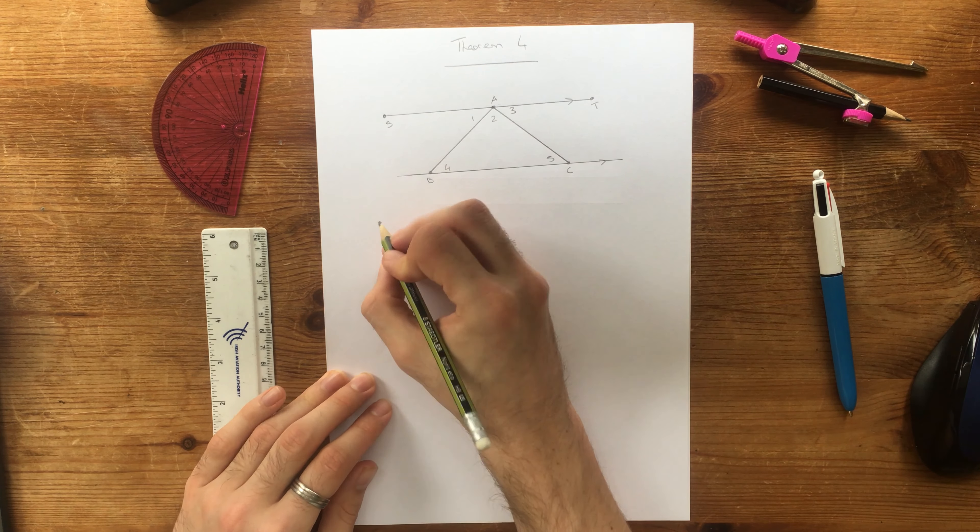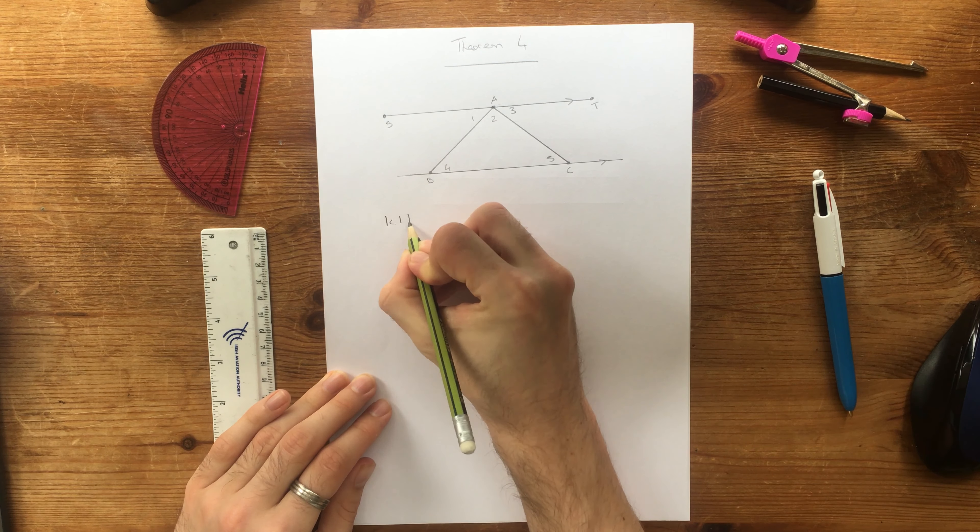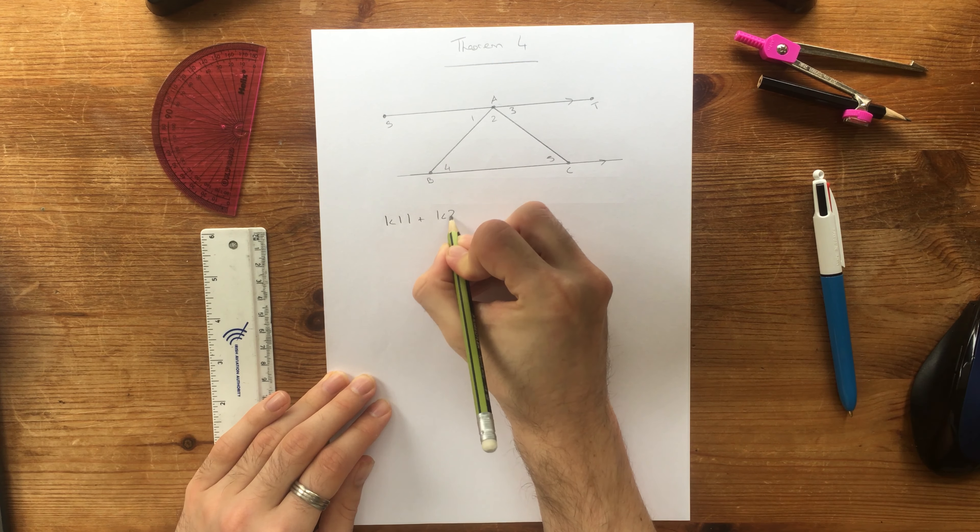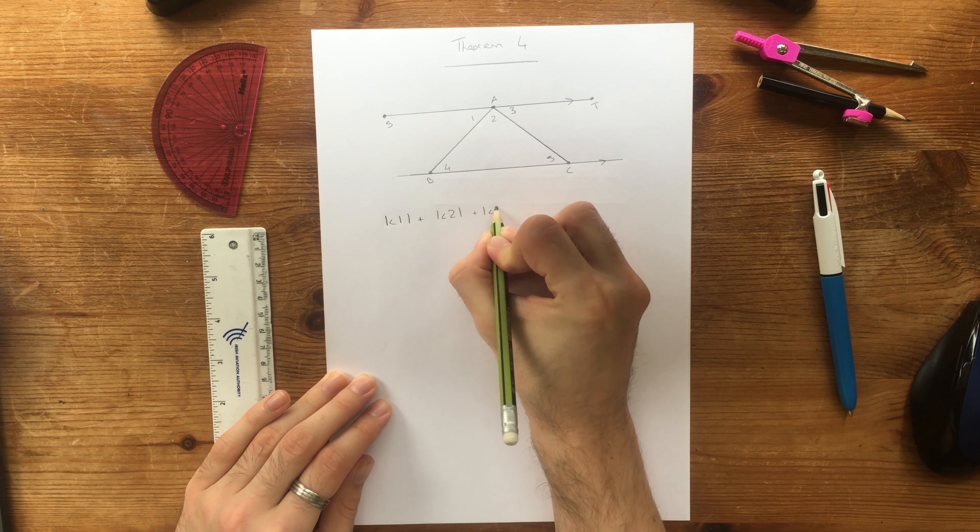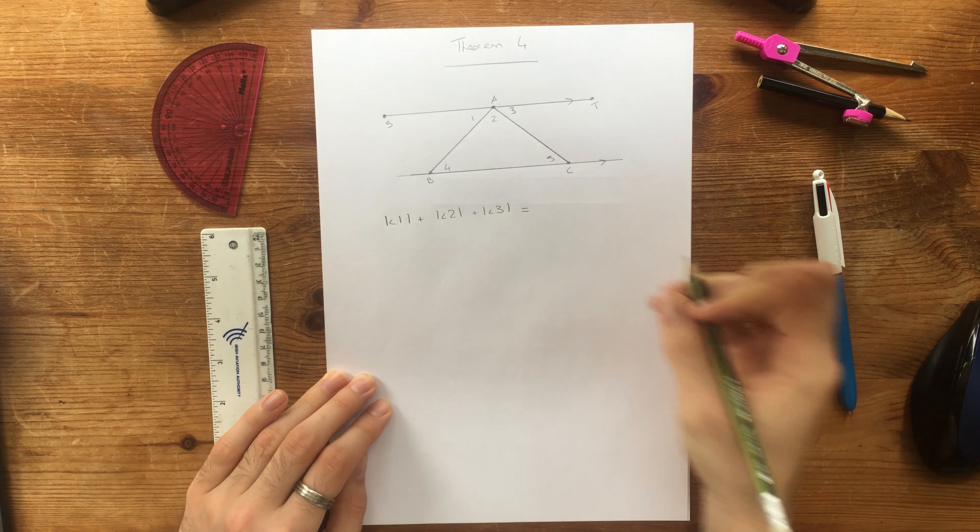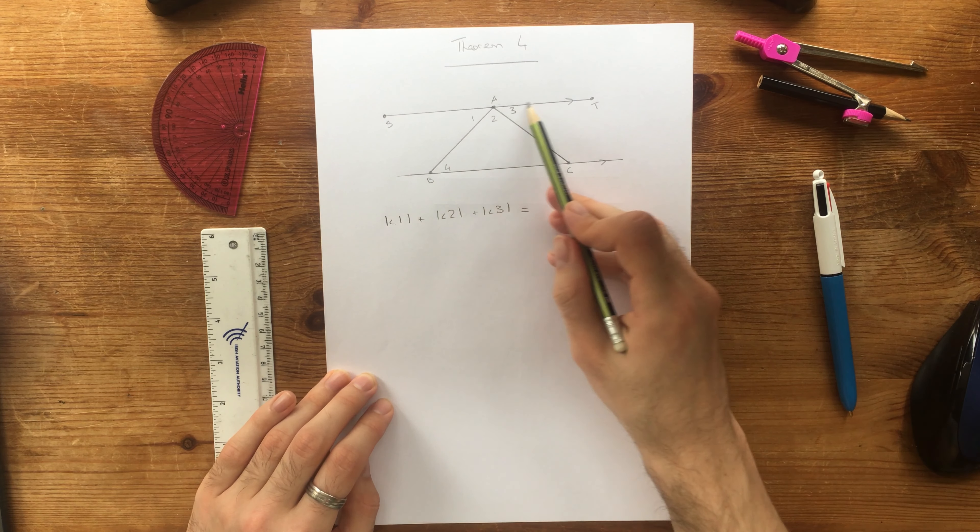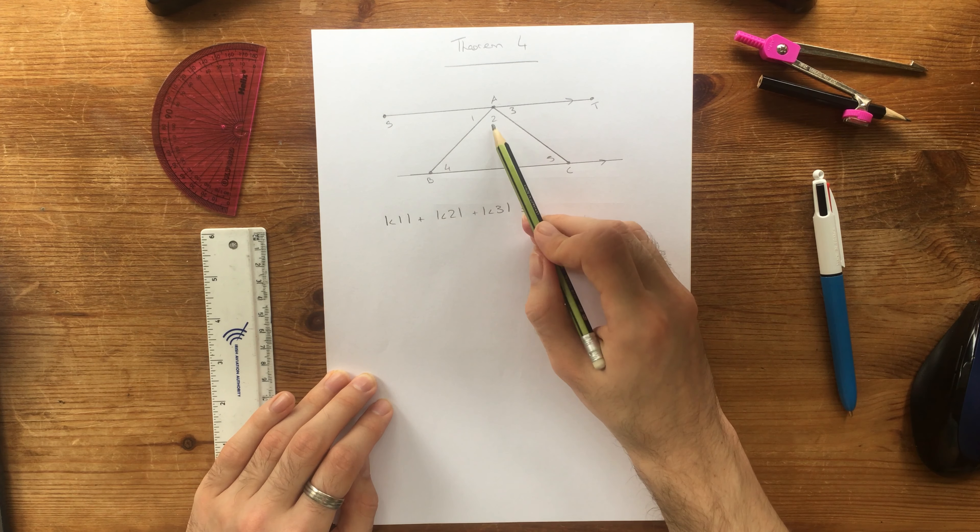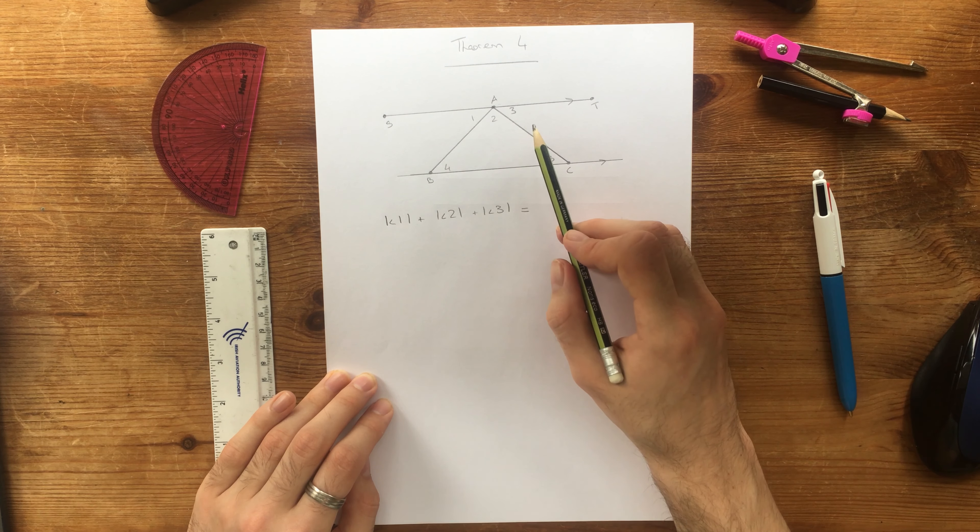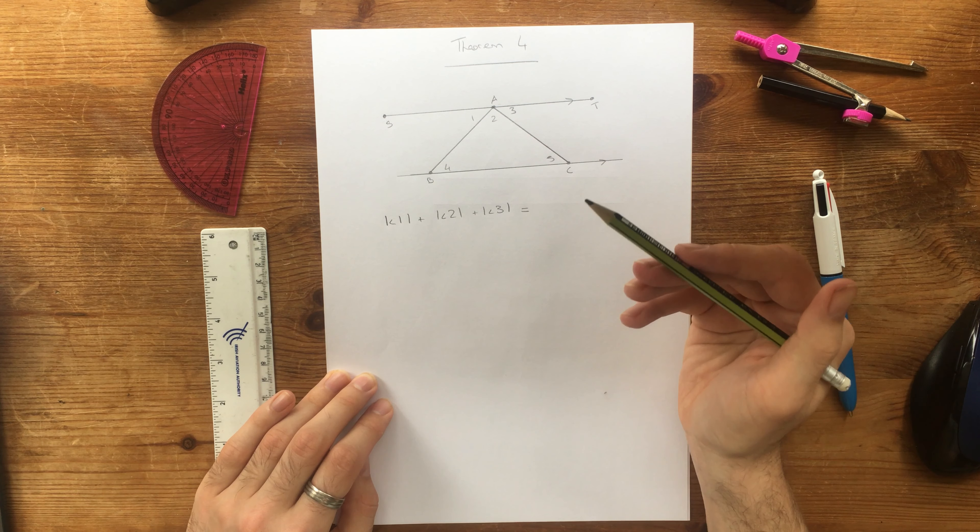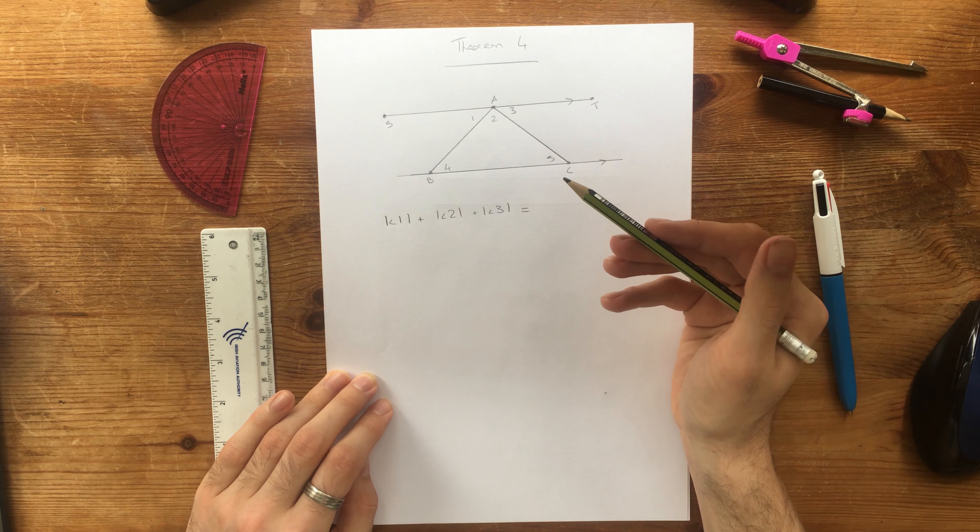Firstly, I'm going to ask you, what is angle 1 plus angle 2 plus angle 3? What does that equal to? Well, along here we can see that we have a straight line, and there's angle 1, angle 2, and angle 3, and we know that a straight angle by theorem 1 is always going to equal 180 degrees. So that's the first thing.